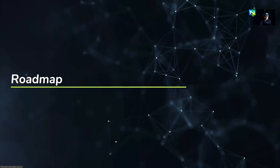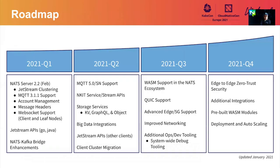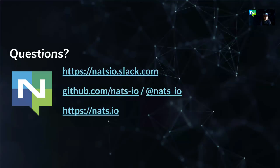For the roadmap, we'll have new client APIs and will spend more time with the Wasm ecosystem later this year. There's also a requested feature: client cluster migration. Thank you for staying for the talk — I'll be back for the Q&A questions. Thank you.